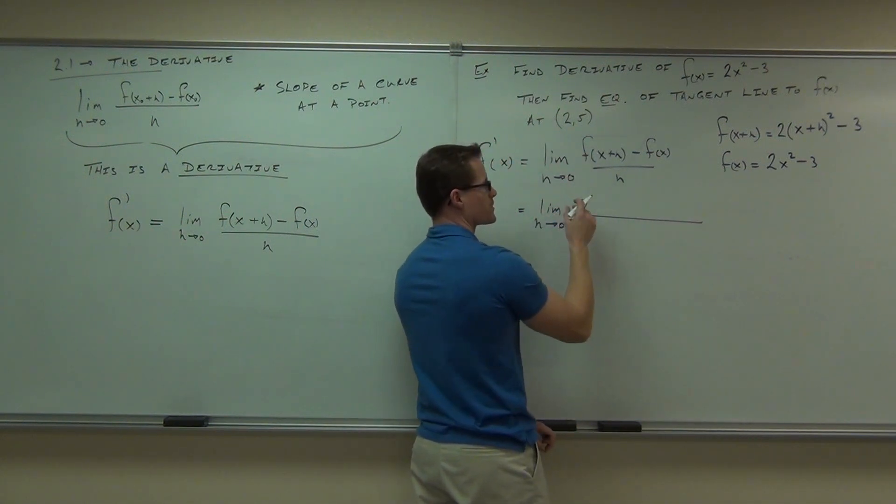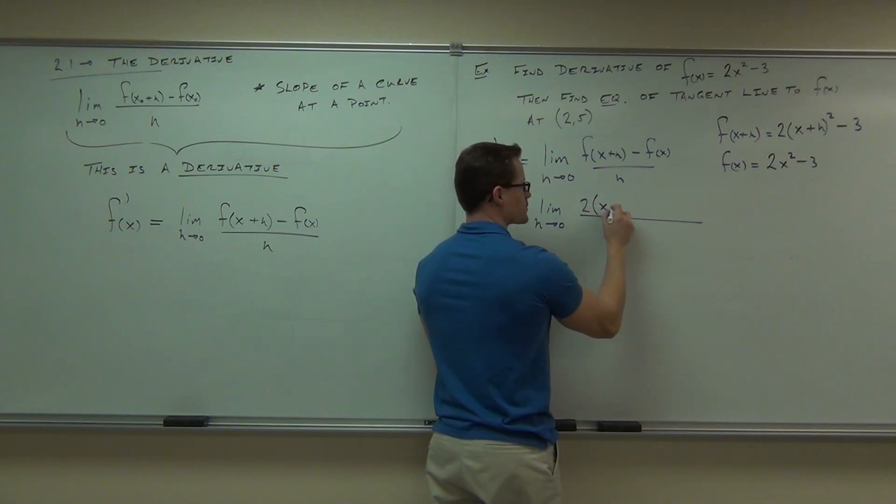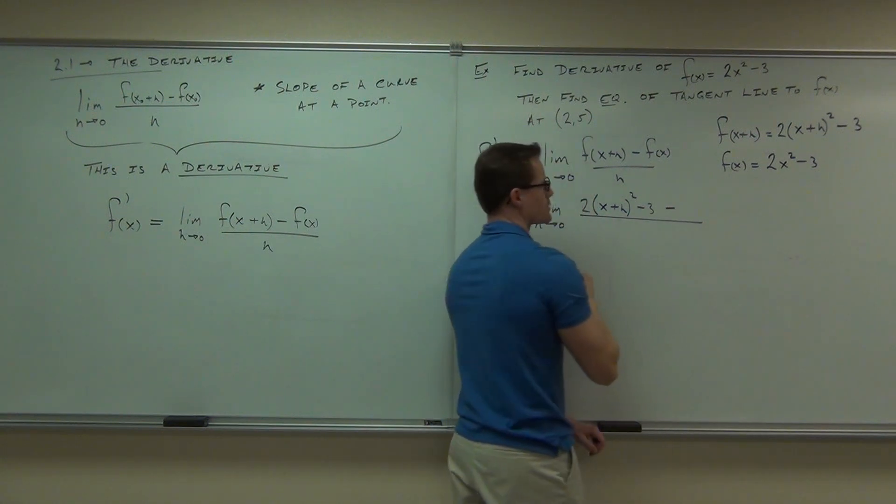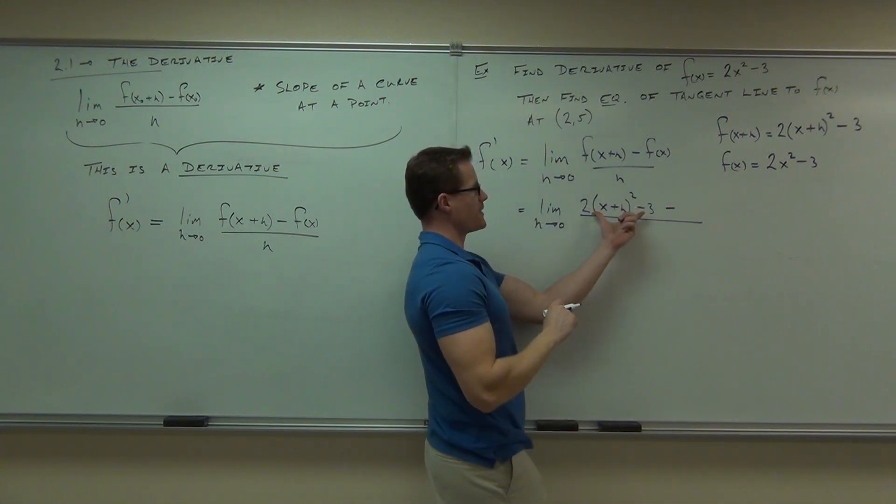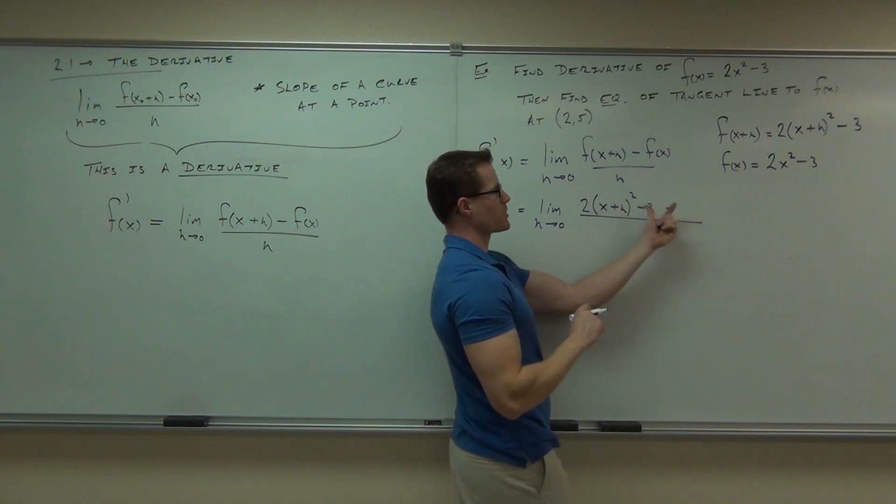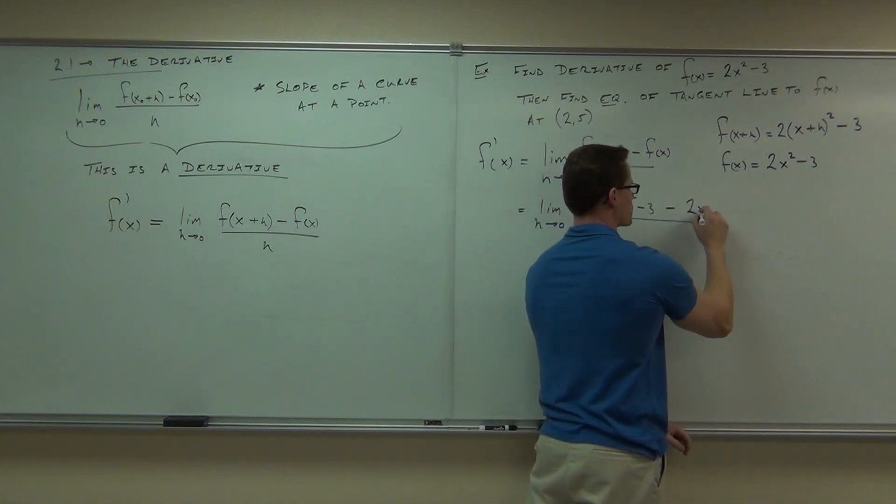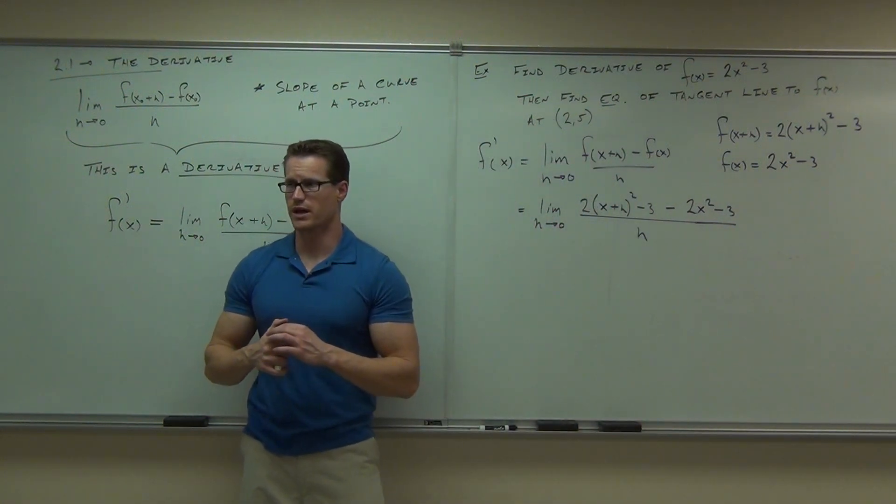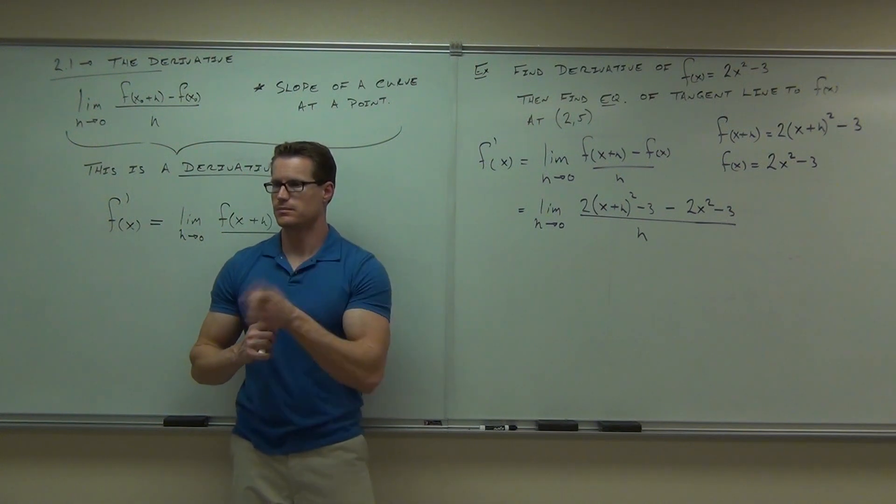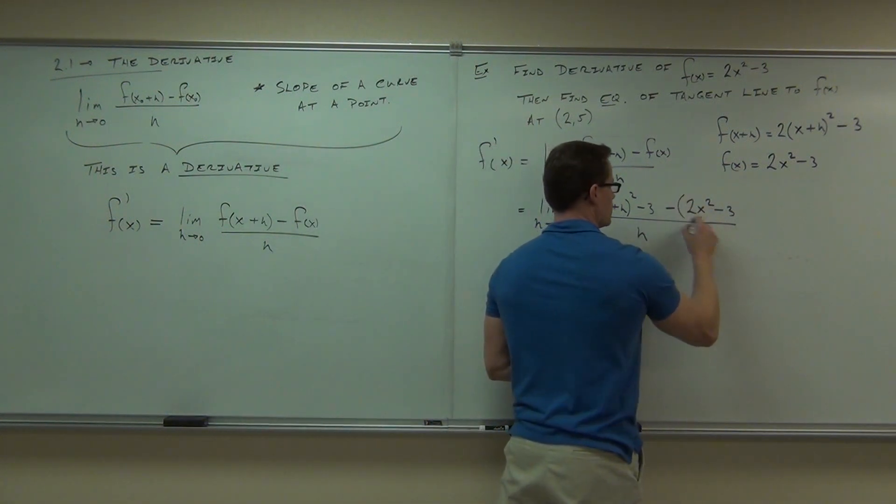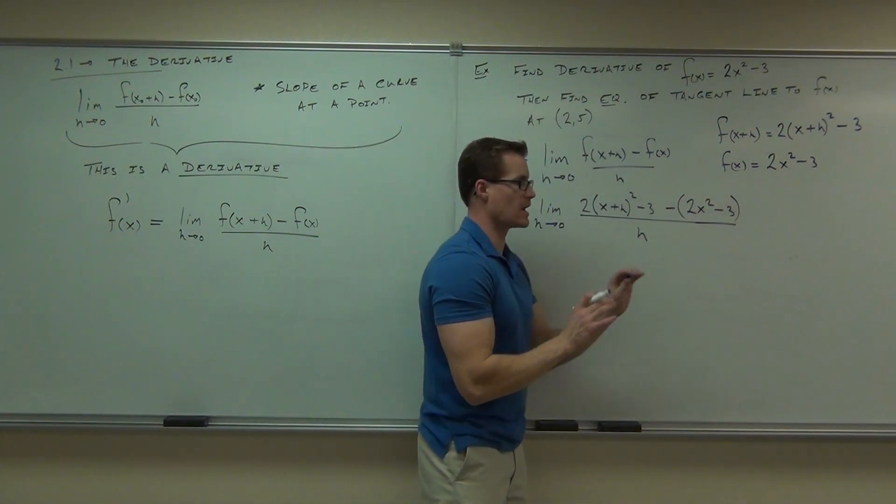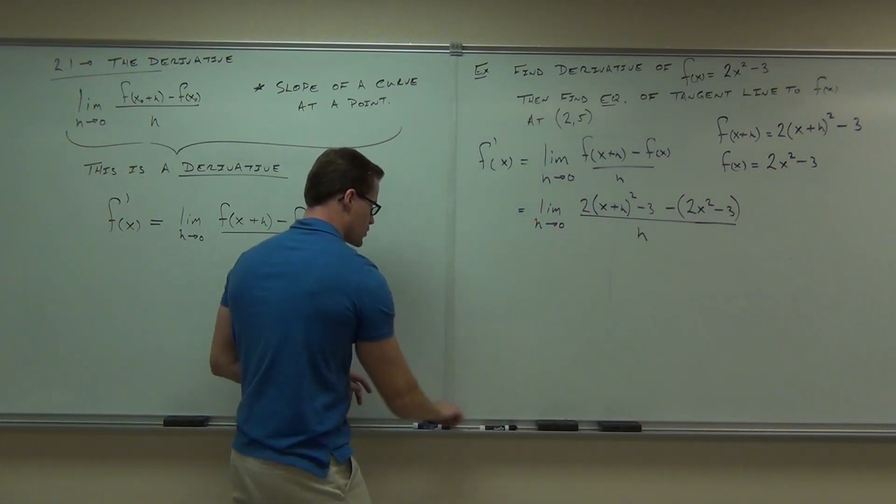So instead of f(x+h), I've got 2(x+h)² - 3 minus. Here's my f(x+h). I've already got that. Now I want to subtract f(x), which is 2x² - 3. Tell me the gigantic flaw that I have on my board right now. Very good. Yeah, that's got to be there because that's going to change your sign. You're subtracting that entire f(x). That's that whole expression. So we'll keep on going here.